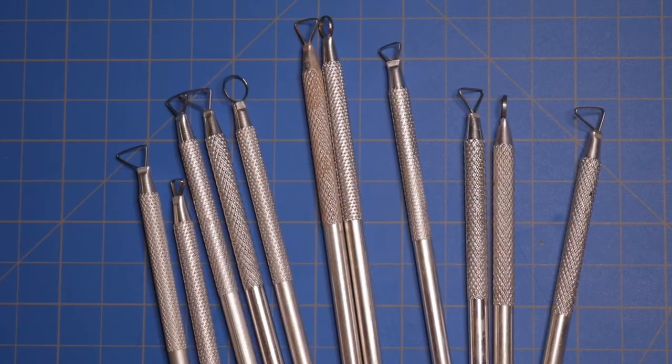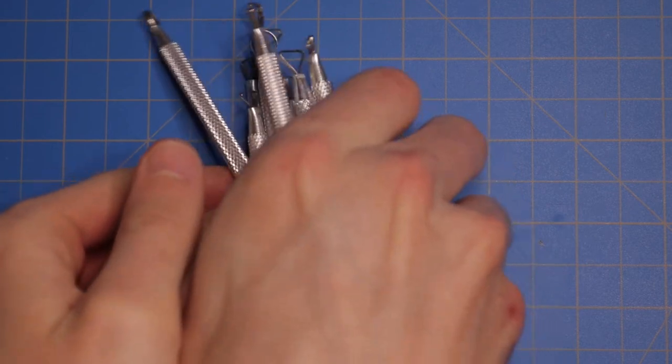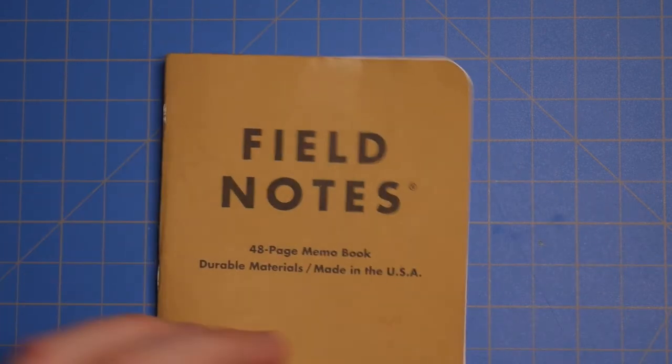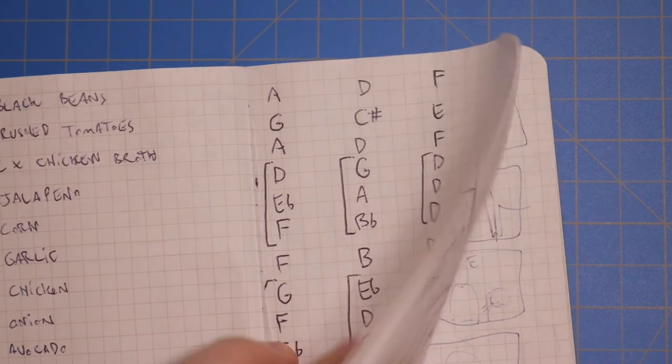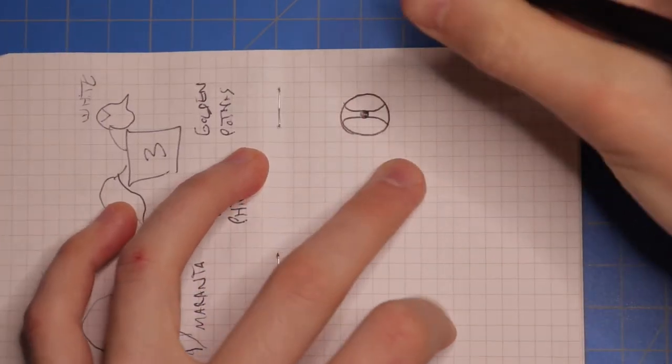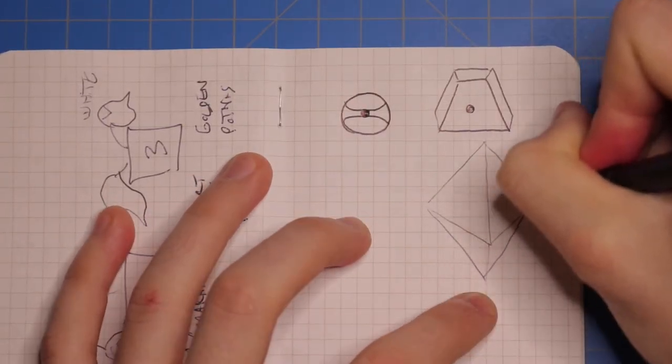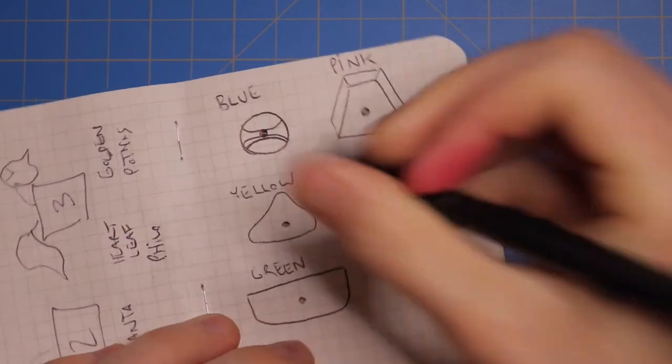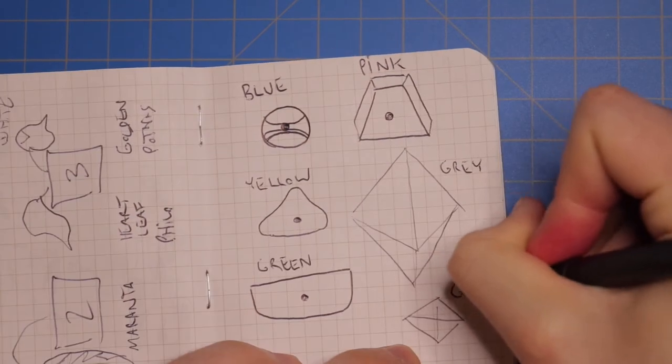First we'll start by sketching out the rough shapes and forms that we'll be aiming for. This way we can better understand how much raw material we'll need to use, and also feel out how they'll look in relation to each other. The shapes and colors I chose were based directly off of the holds in our local climbing gym.